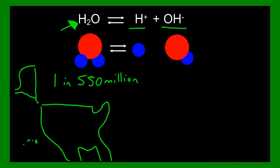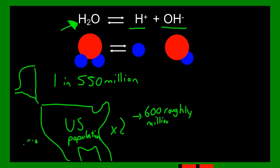If you took the United States population and multiply it by 2, that would give you a rough estimate. That's roughly 600 million. It would be like if one person out of every two United States were to randomly split.